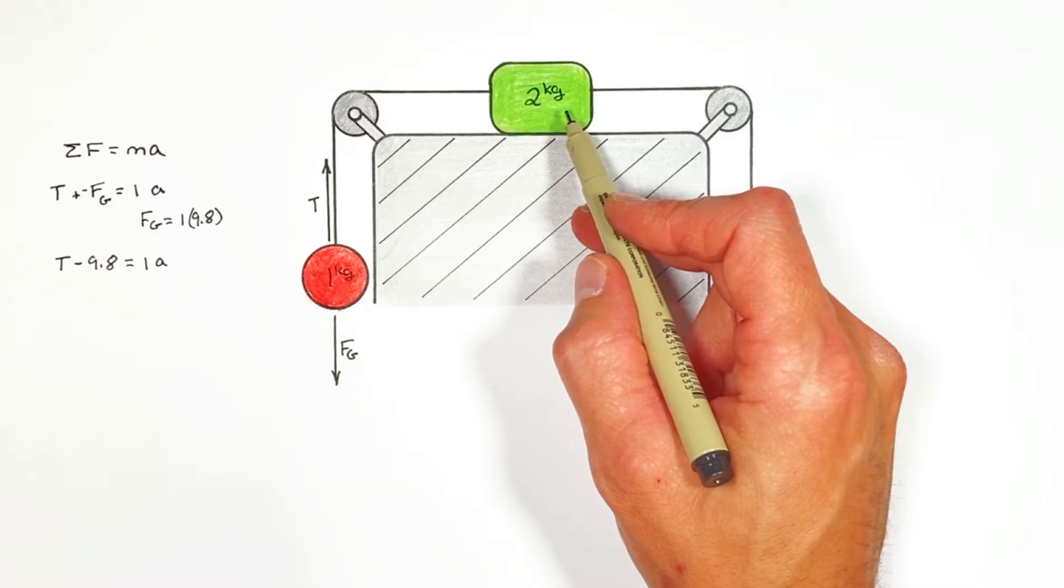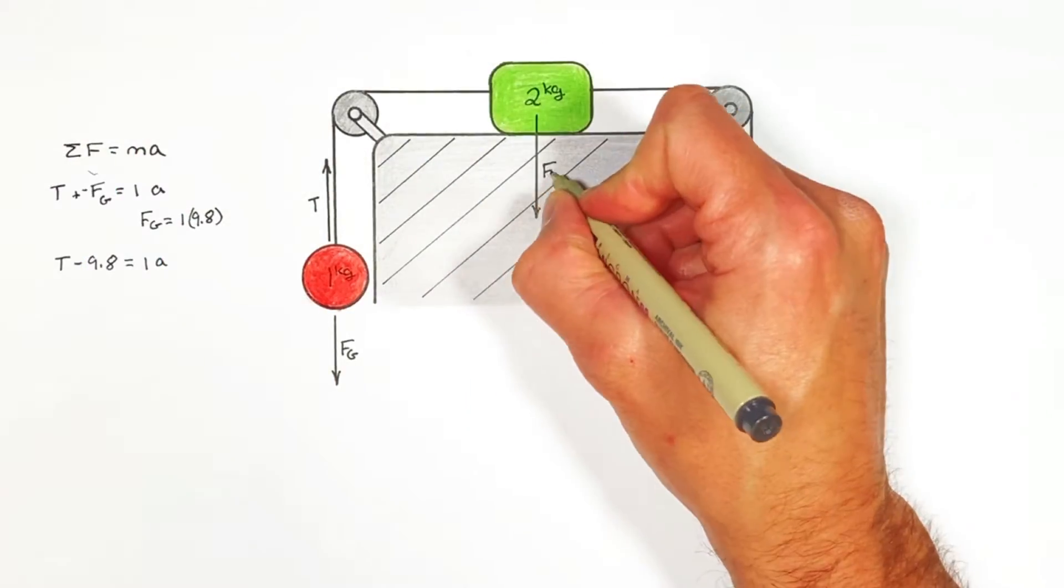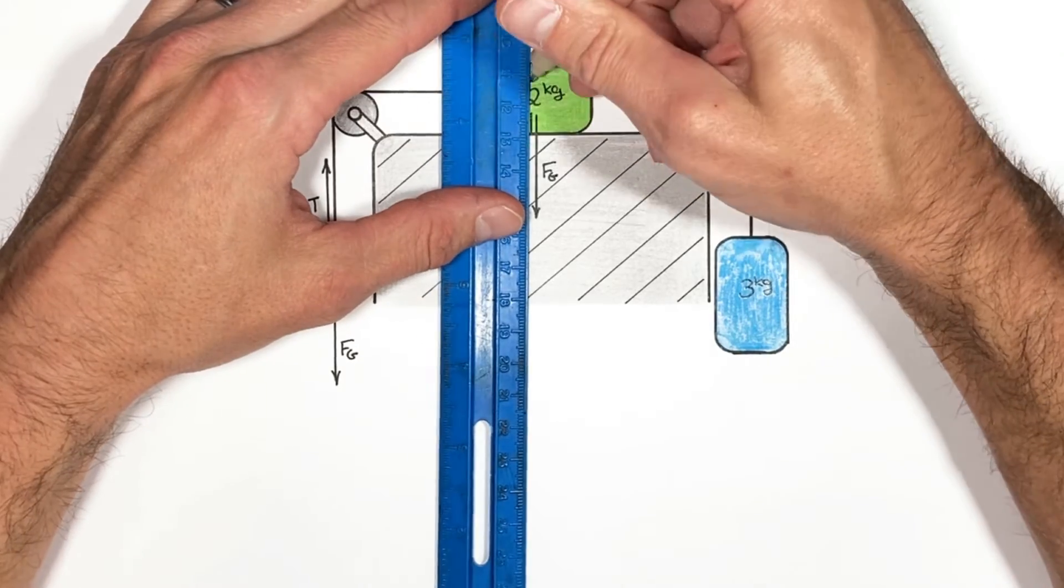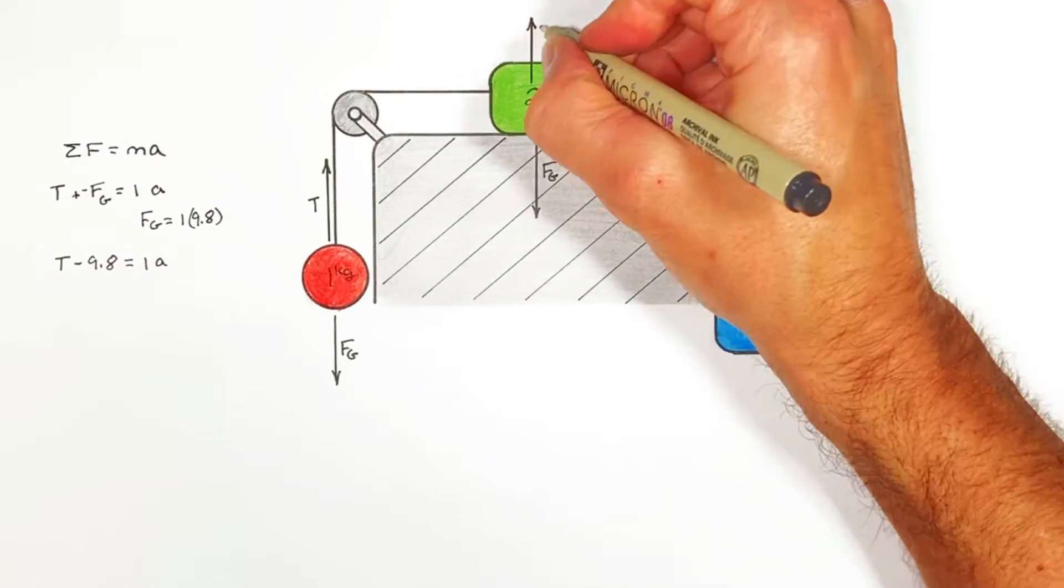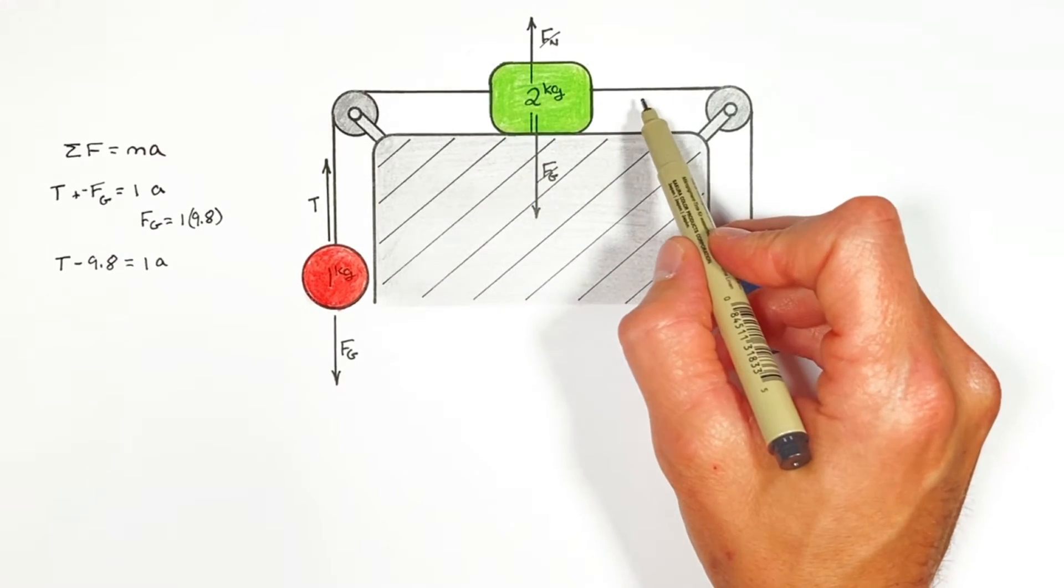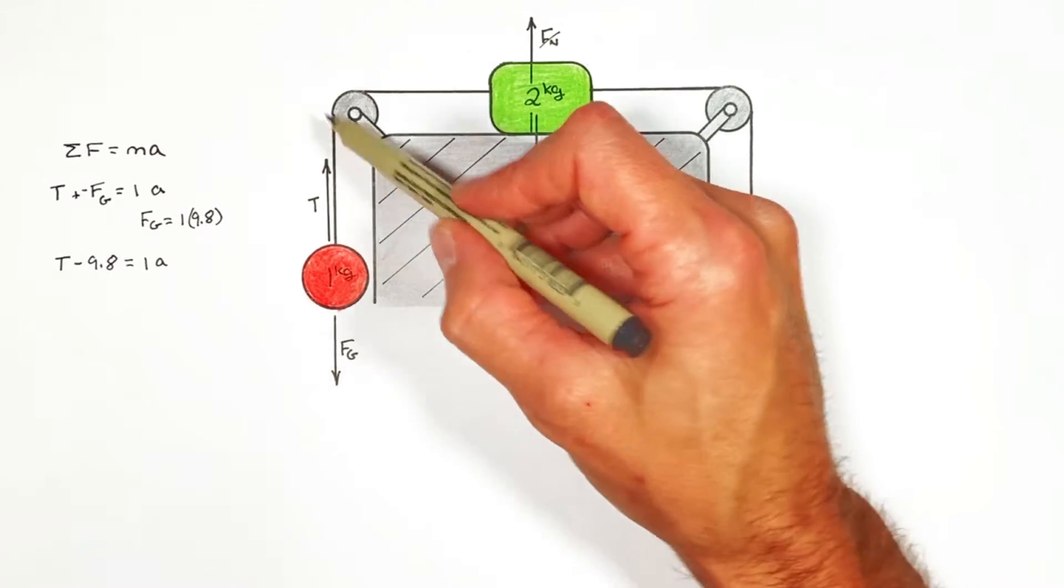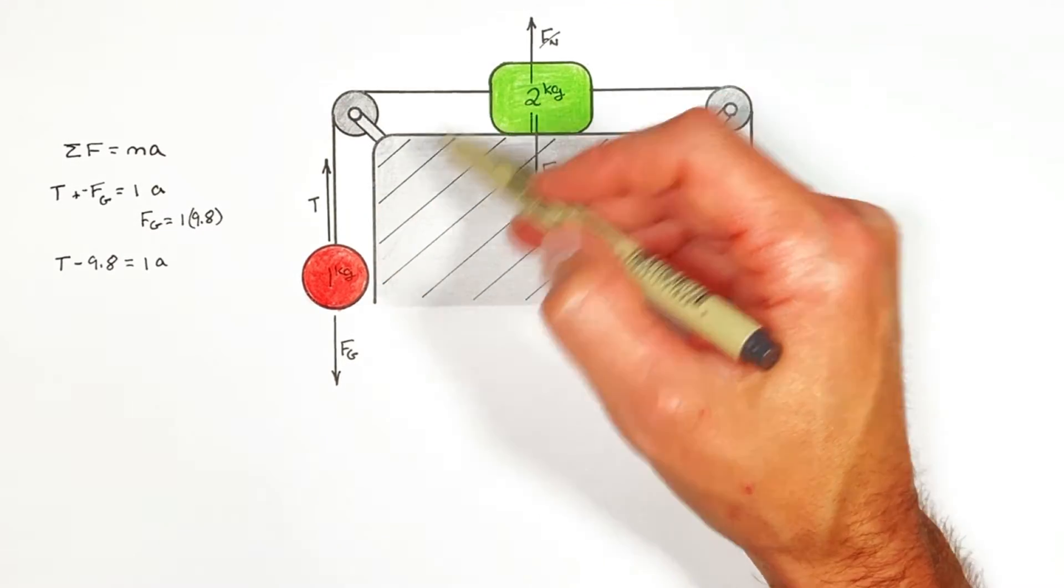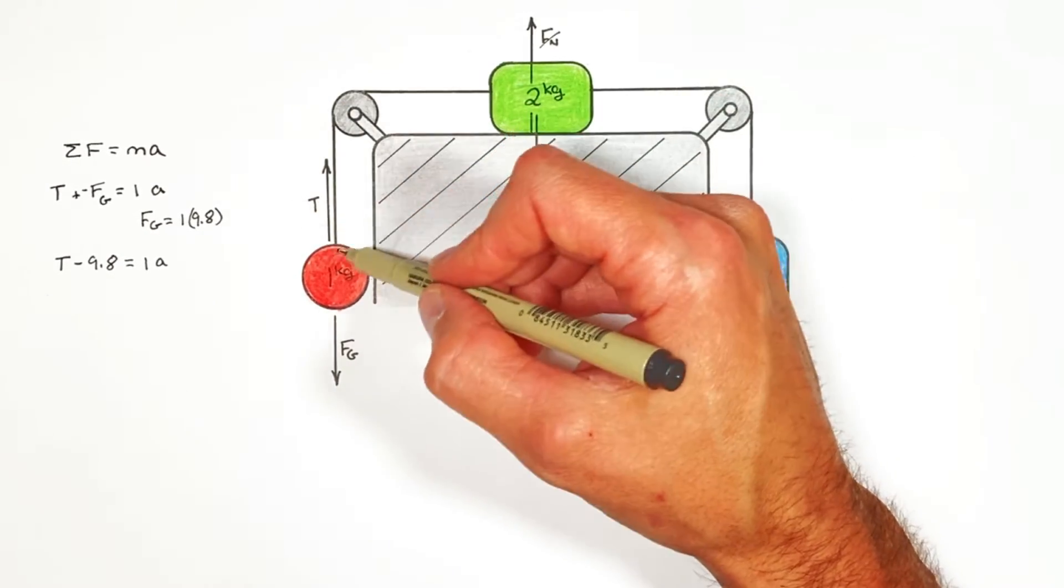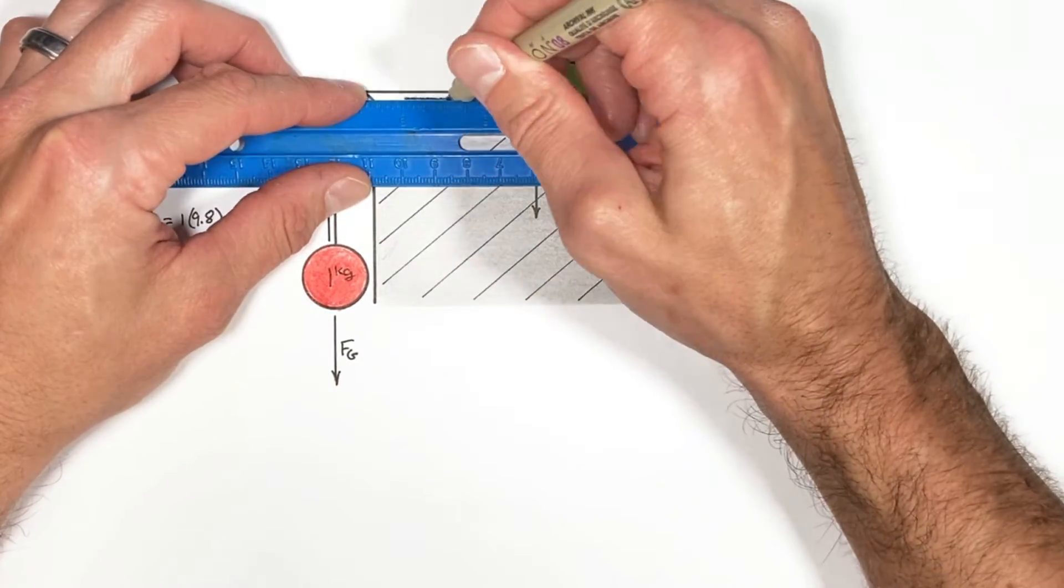So looking at this block right here again there's the force downward by gravity. But canceling out the force by gravity there's the normal force. But horizontally on this block there's two strings. Now the rule with strings is that whatever tension is at one end of the string needs to be at the other. So if there's some tension T over here on this hanging ball that same tension is going to exist over here on our block.